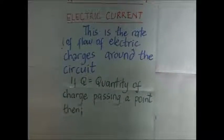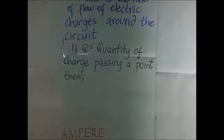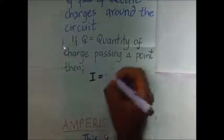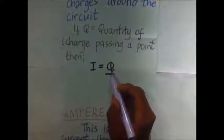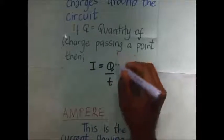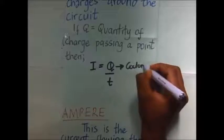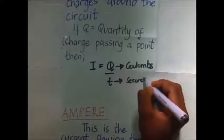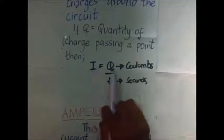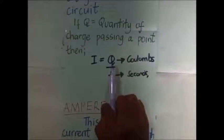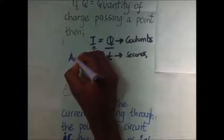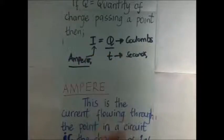Electric current is the rate of flow of electric charges around the circuit. If Q is the quantity of charge passing a point, then current is equal to the rate of flow of electric charges, represented as Q over T. These electric charges are in Coulombs and T is in seconds, so current is Coulombs per second. The SI unit of current is the ampere.